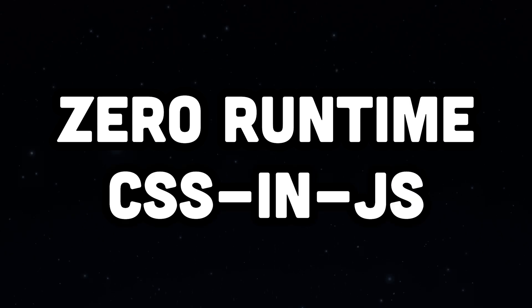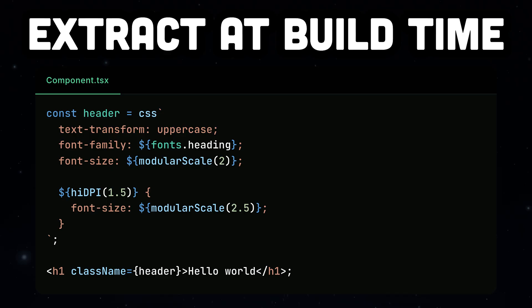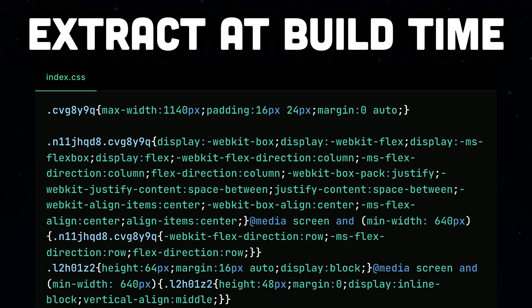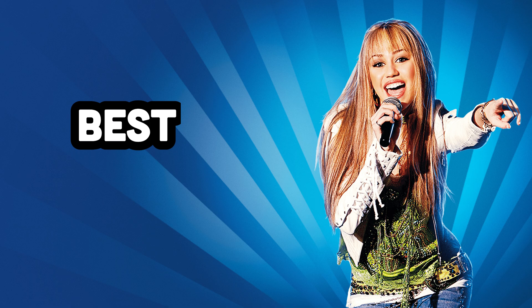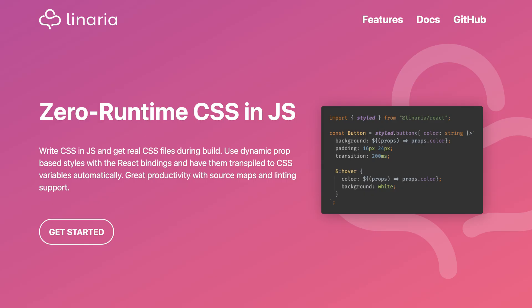The other choice is zero runtime CSS-in-JS, getting all of the benefits of CSS-in-JS without the performance hit. These work by extracting styles into real CSS at build time, meaning there is no runtime overhead and no performance hit — it's the best of both worlds. One of these options is Linaria. If you're migrating from Styled Components, Linaria is your smoothest path forward.